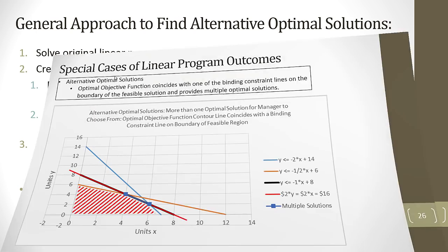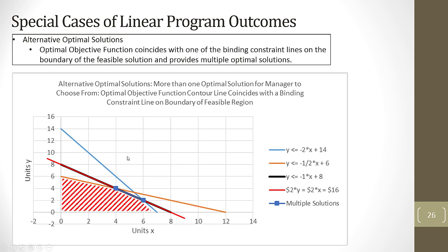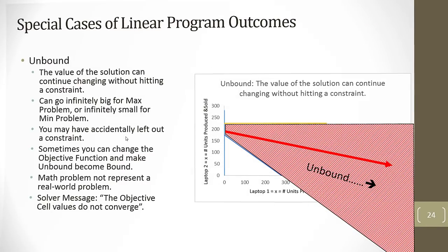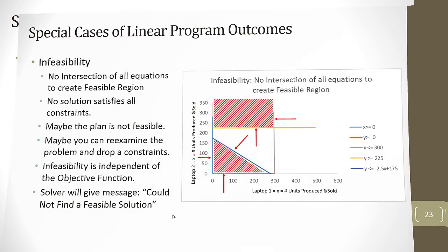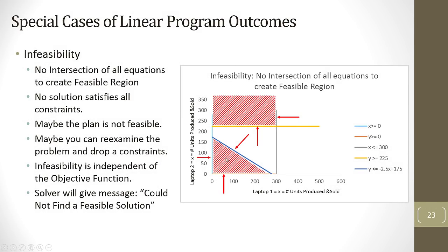All right, so this video, we talked about alternative optimal solutions. We talked about unbound, and we talked about infeasibility. All right, next video, we're going to use Excel Solver to solve a transportation shipping cost problem, where our optimal solution will be a minimum cost. All right, we'll see you next video.